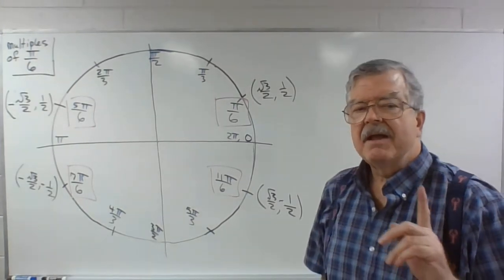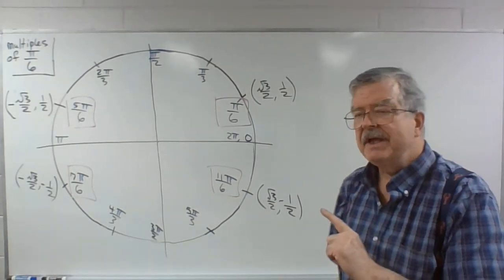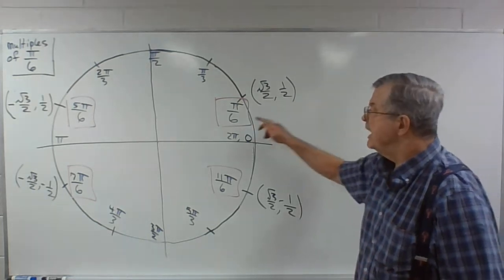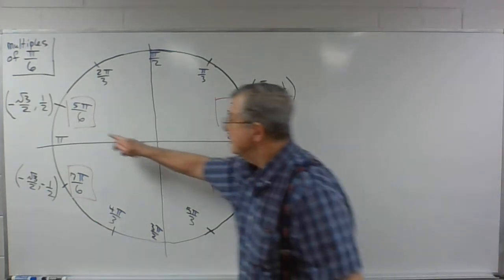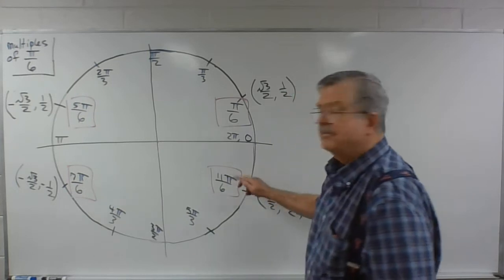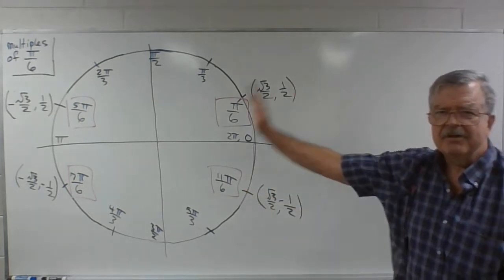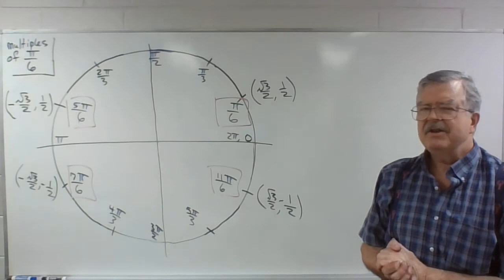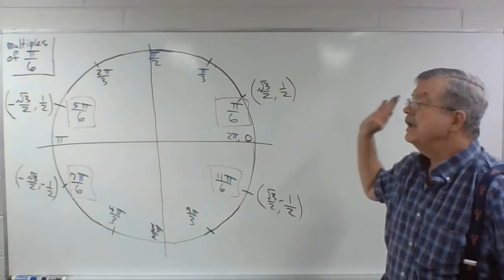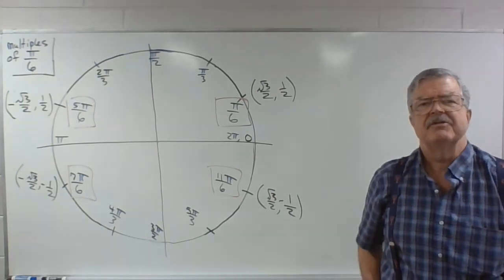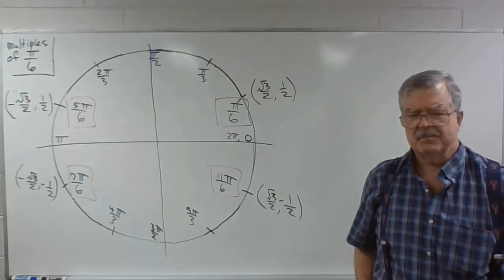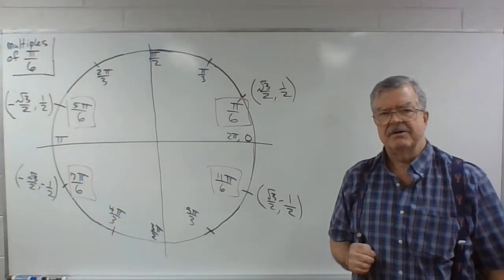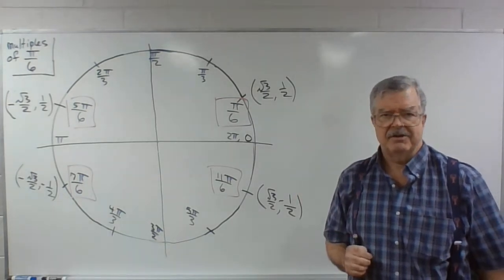I would practice doing the unit circle with just those multiples of pi over 6 that don't reduce. Make several copies of this circle every day for a few days, and you'll know these for the rest of your life. This is probably the easiest way to learn the sines and cosines.